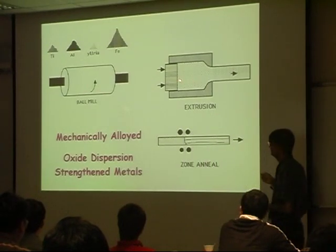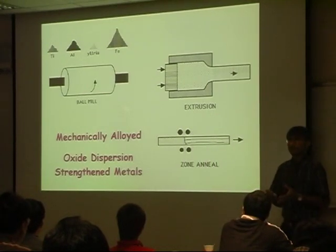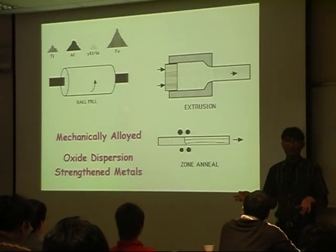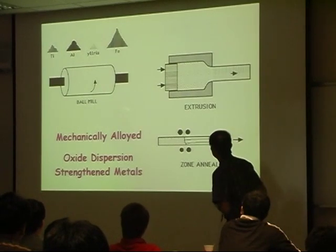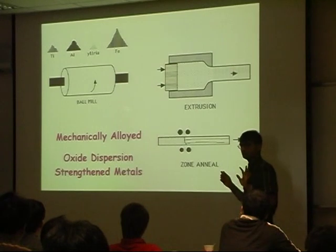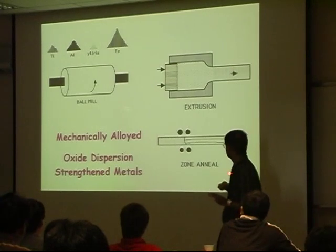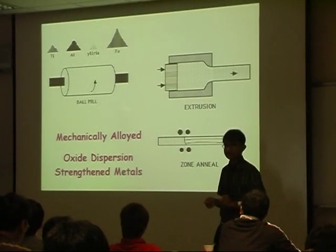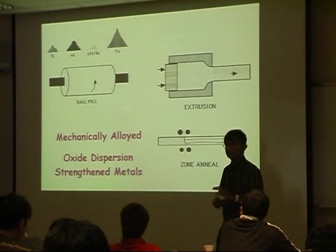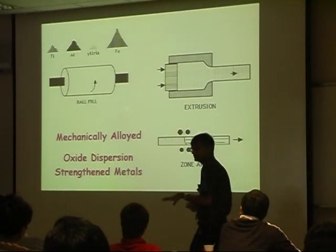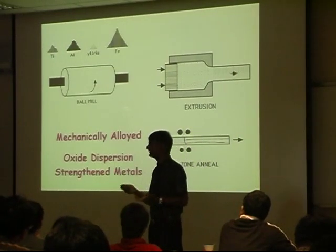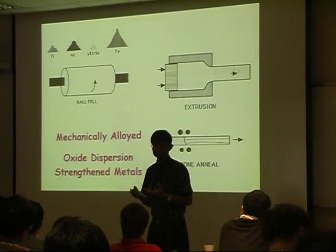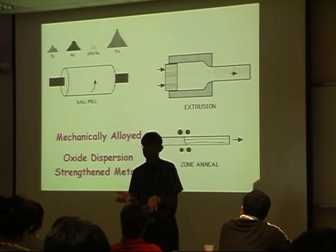You then take that powder and extrude it to form a larger component. You might then give it some kind of heat treatment, but that is not important from today's lecture point of view. So we are doing severe deformation, producing powders, and then joining up the powders using a process such as extrusion to produce large dimensions of material.